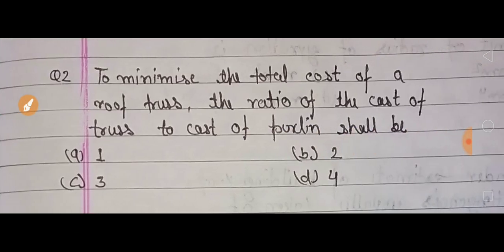Our next question: to minimize the total cost of a roof truss, the ratio of the cost of truss to the cost of perlin. Roof truss की जितनी भी cost आती है, उसको minimum रखने के लिए, cost of truss और cost of perlin का क्या ratio होना चाहिए?